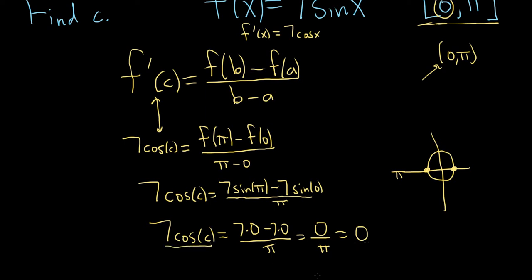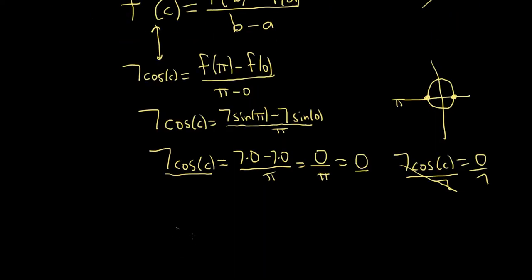So you have 7 cosine of c equal to 0. So I'm going to write that again over here. And then what you can do is divide by 7. So we have the cosine of c is equal to 0. And now we have to solve this equation. Now, in order to solve this, it's really important to be aware of our interval. So our interval is 0 to π.